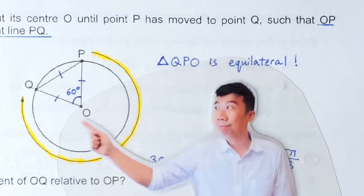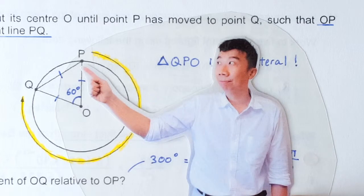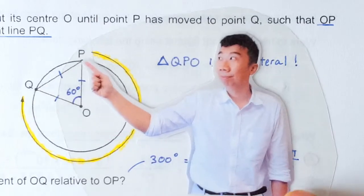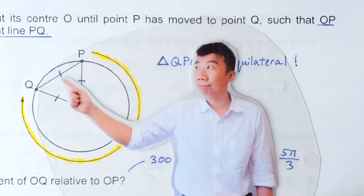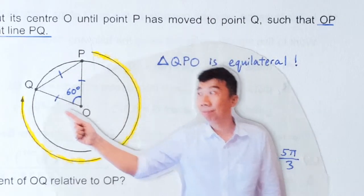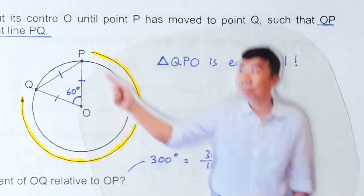So the question said that OP is the same length as PQ, which means these two lengths are the same. But of course OP and OQ are of the same lengths because they are both radius of this circle.